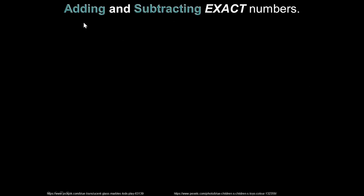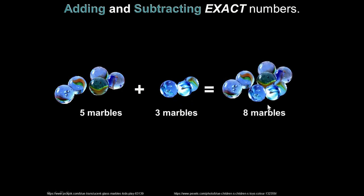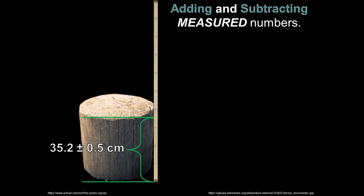So, let's remind ourselves of what we've already been doing. When we have added and subtracted, we've always done so with exact numbers. If I have five marbles and you add three marbles, you get eight marbles. But if we use a meter stick to measure the length of a stump at 35.2 ± 0.5 centimeters,